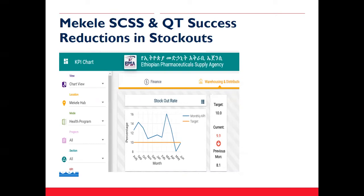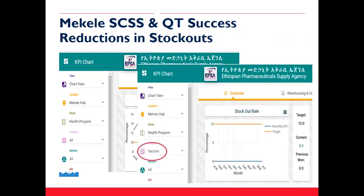The dashboard reports on a set of 118 indicator products out of more than 1,000 products managed by EPSA, eight of the tracer products being vaccines. For vaccines specifically, there have been zero stockouts at the hub for over a year since the team was instituted. Prior to the team creation, vaccine stockouts were at about 5%.